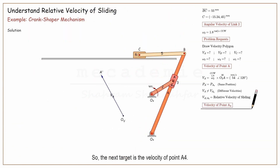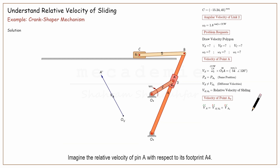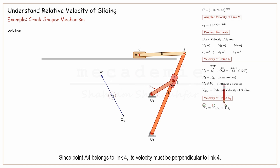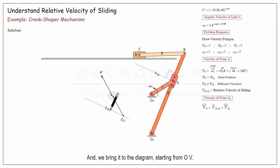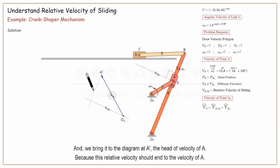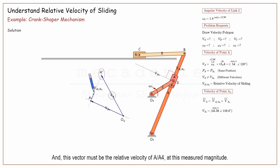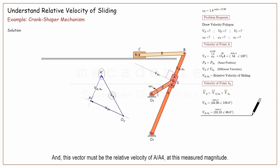The next target is the velocity of point A4. We can relate it to pin A — if we add the relative velocity of pin A with respect to its footprint A4 to the velocity of the footprint A4, then we have the velocity of pin A. Since point A4 belongs to link 4, its velocity must be perpendicular to link 4, and we bring it to the diagram starting from OV. The relative velocity of sliding is along link 4, and we bring it to the diagram at A'. The two extensions intersect at A4'. Here is the velocity of A4, and this vector is the relative velocity of A with respect to A4.